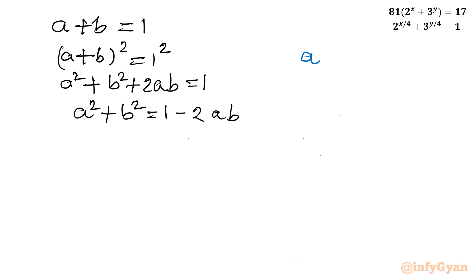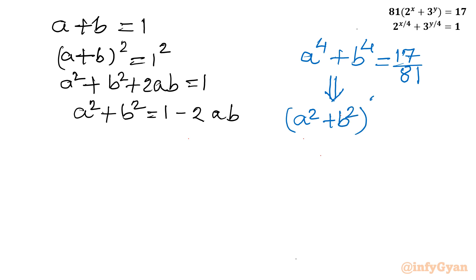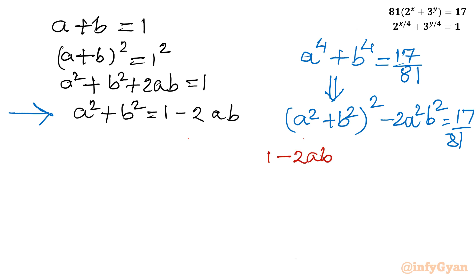We have a^4 + b^4 = 17/81. I will use the algebraic identity where a^4 + b^4 can be written as (a² + b²)² - 2a²b². So I will write (a² + b²)² - 2a²b² = 17/81. Now I will substitute the value of a² + b², which comes from a + b = 1, giving a² + b² = 1 - 2ab. So I write (1 - 2ab)² - 2a²b² = 17/81.